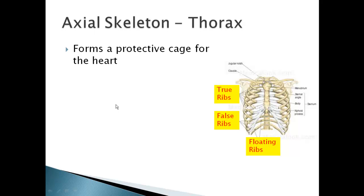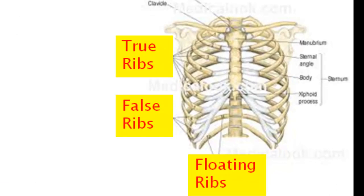If we move a little bit lower in the axial skeleton, we reach the thorax. The main component there is your ribcage, and it forms a protective cage for all of those vital organs within it. There are a couple different types of ribs: the first are the true ribs — seven pairs directly attached to the breastbone. There are five pairs of false ribs, which are indirectly attached to the sternum, joining with some cartilage. And then we have two pairs of floating ribs, which aren't attached to anything. There's a lot of flexibility with the cartilage to allow your chest to expand and contract for breathing purposes.